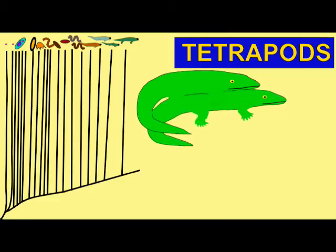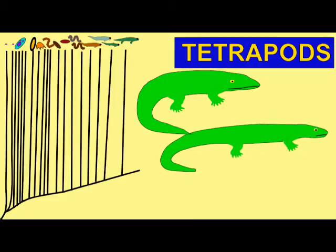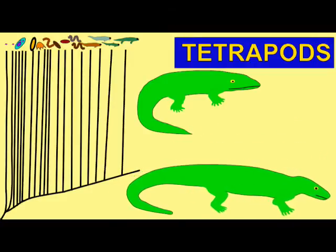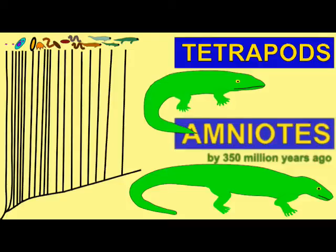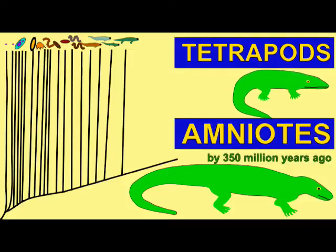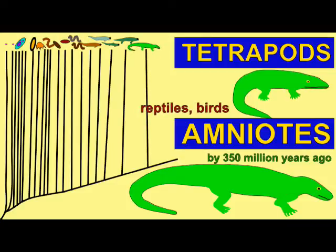Do you consider yourself to be a reptile? Since the first amniotes were reptiles, then all modern amniotes, which would include mammals and birds, are their descendants. If you do not consider mammals and birds to be reptiles, then the term reptile is a paraphyletic group in your usage. It includes some, but not all, of the descendants of a common ancestor.